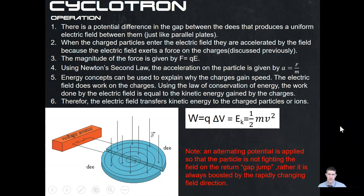There is a potential difference in the gap between the d's that produces a uniform electric field between them. The d's form essentially a parallel plate arrangement — with an alternating power source on either side, we generate this electric field between the gaps. If we alternate the potential, the field direction is constantly flipping back and forth. When the charged particle enters this electric field it's accelerated, because the electric field exerts a force on the charge in the direction of the field.